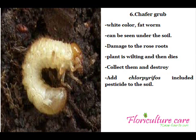Chafer Grub is a white, fat worm that can be seen under the soil. They damage rose roots by eating the bark of the roots, causing the plant to wilt and then die immediately. Chafer Grub does huge damage on rose plants, so collect and destroy them when ploughing, or add a Chlorpyrifos-based pesticide to the soil.